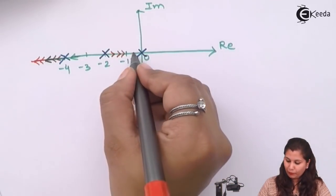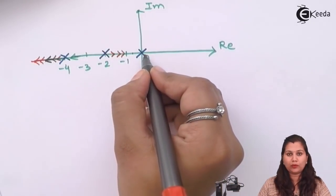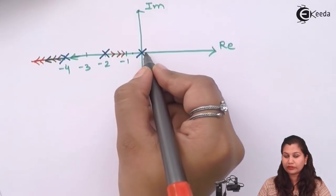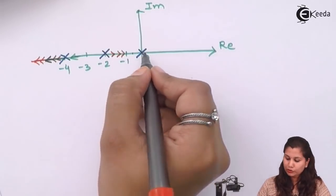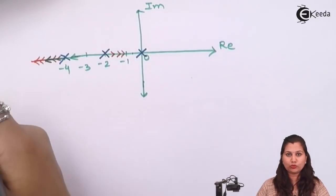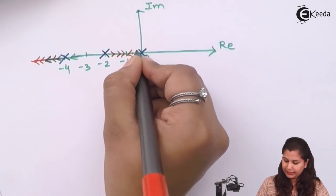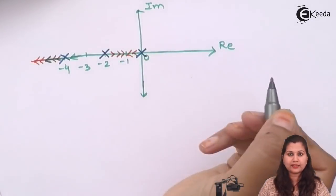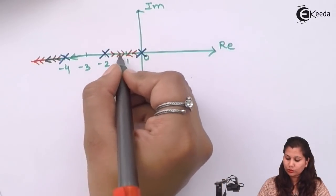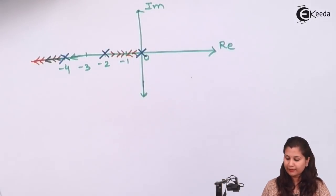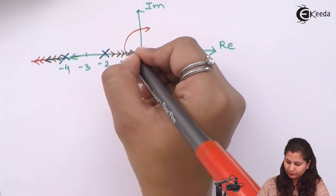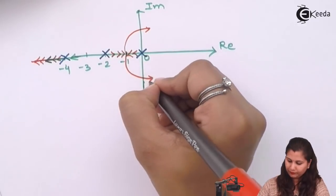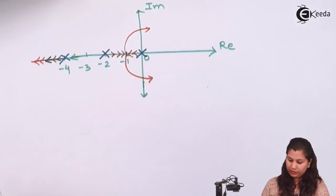If we take a point here for this pole, then the number of poles on the right hand side will be 1, that is odd. So the direction of root locus will be towards infinity. And because these two root loci are meeting at some point and then going to diverge, it will diverge like this.